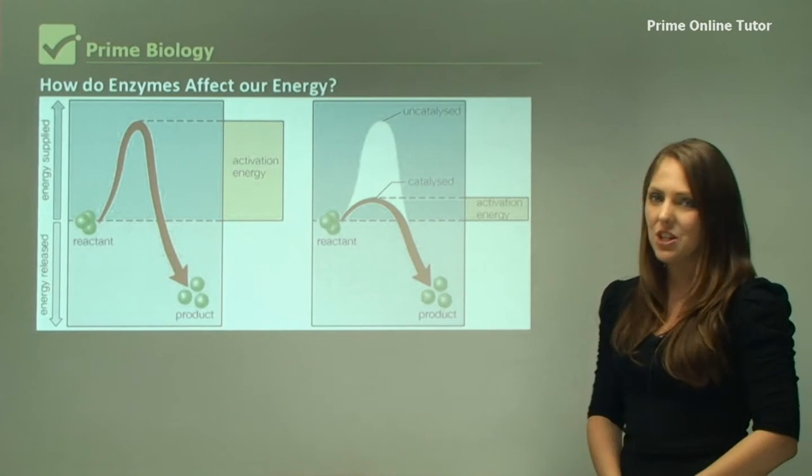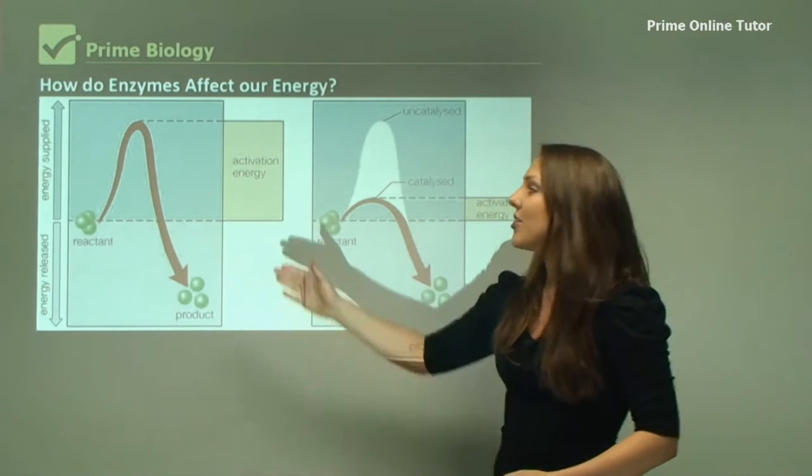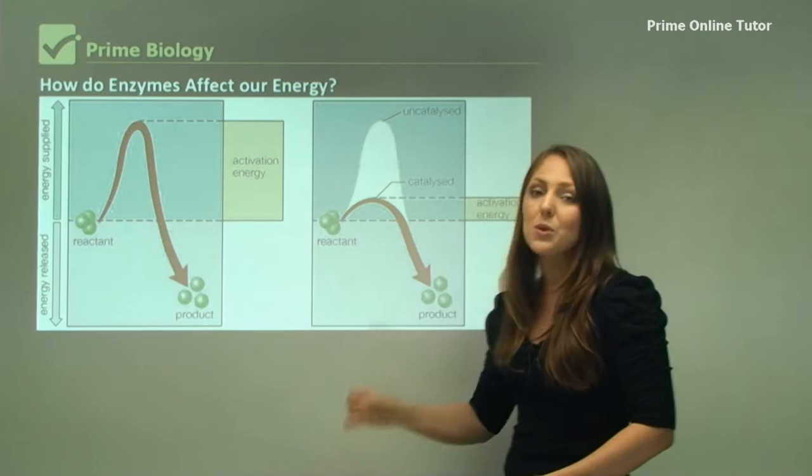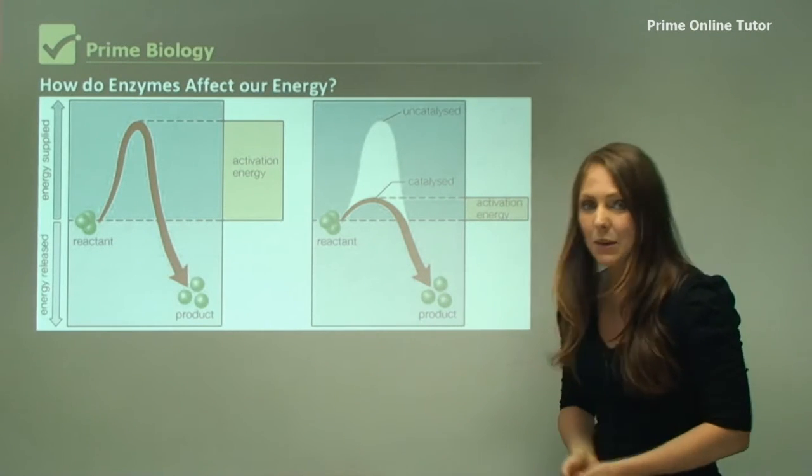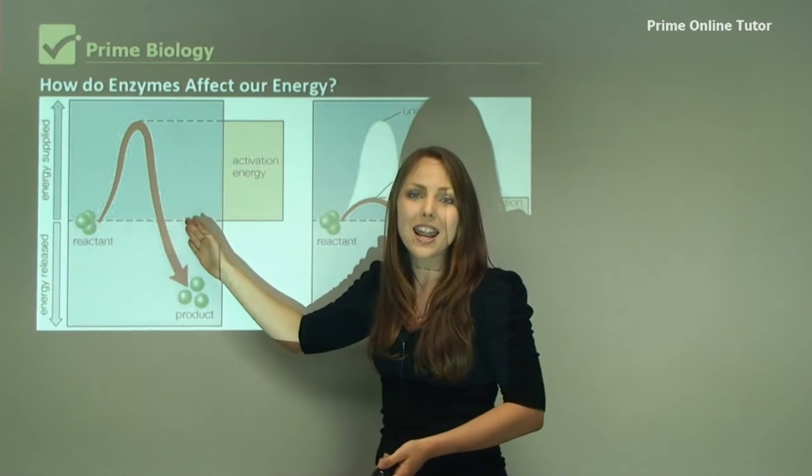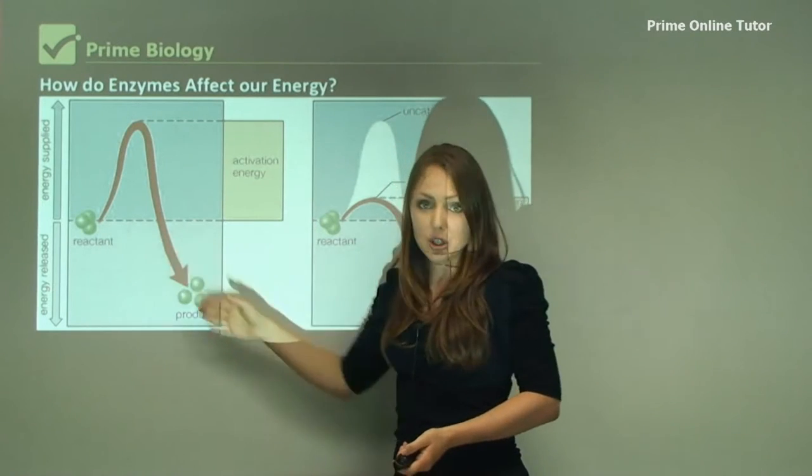How do enzymes affect our energy? Now we have two graphs here. On the left hand side we can see this graph is the energy needed without enzymes. So if an enzyme were to react spontaneously without an enzyme, the activation energy is actually quite large for the reactants to go into products.